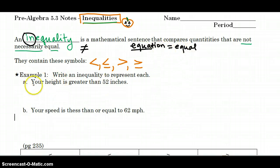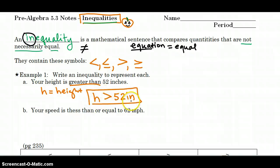For example, your height is greater than 52 inches. So the first thing you need to do is decide a variable. Let's use H for height. And it says your height is greater than 52 inches. That's how you would write that sentence. Height greater than 52 inches.